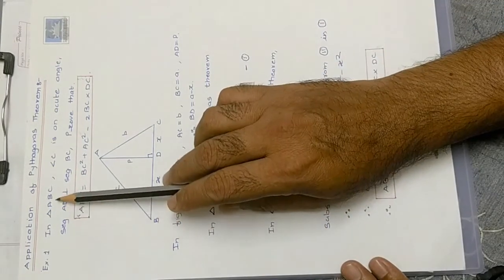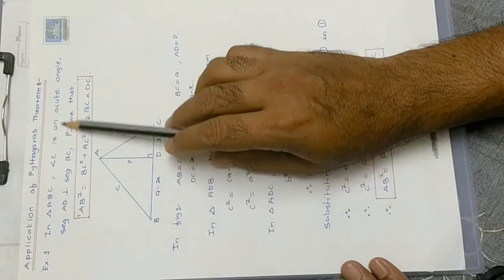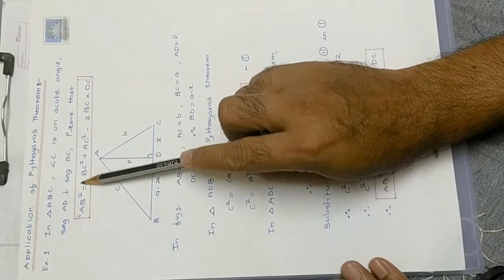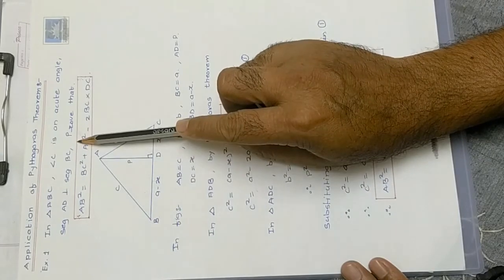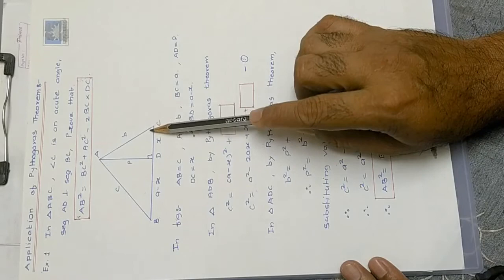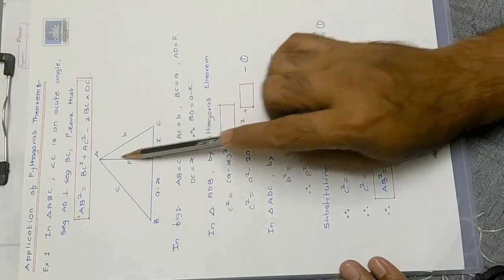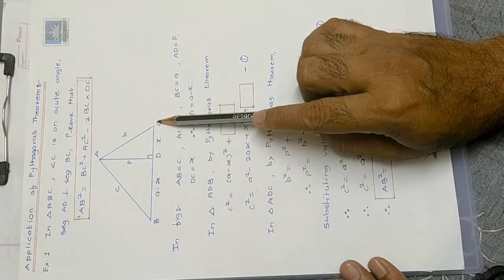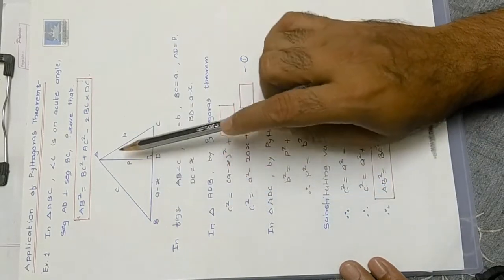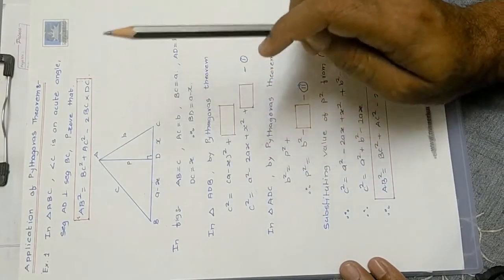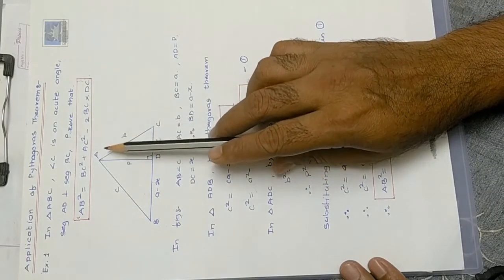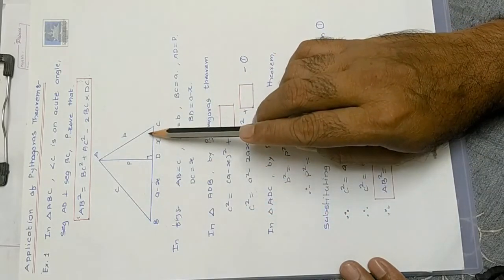In triangle ABC, angle C is an acute angle, and segment AD is perpendicular to segment BC. So triangle ABC is the acute angle triangle. AD is perpendicular drawn to BC.